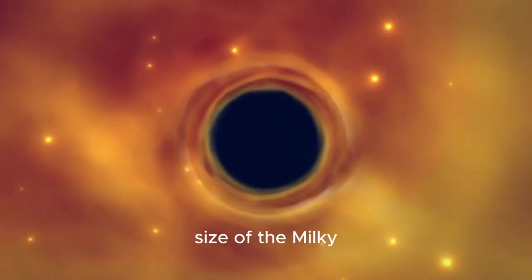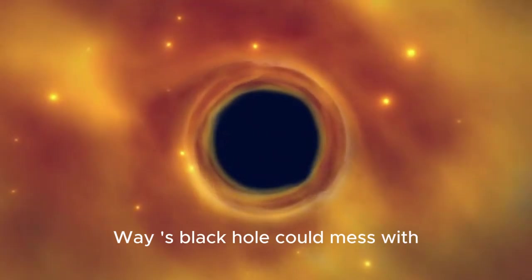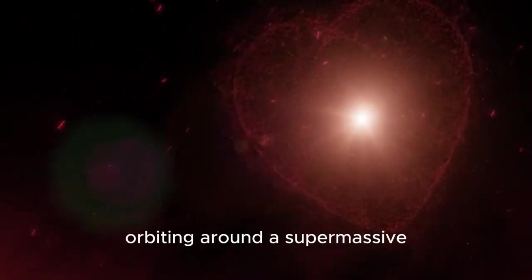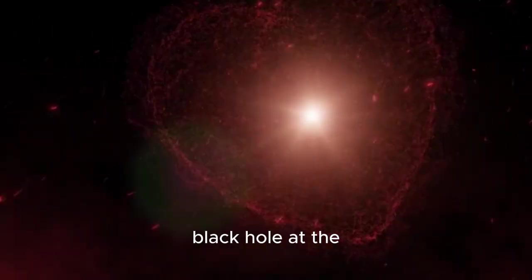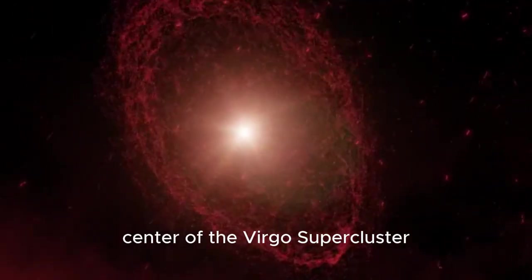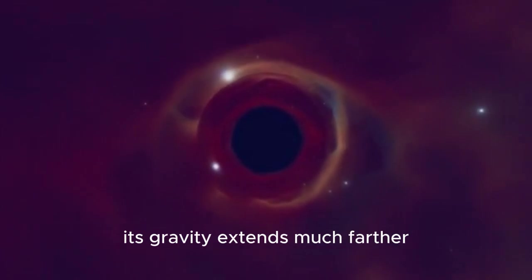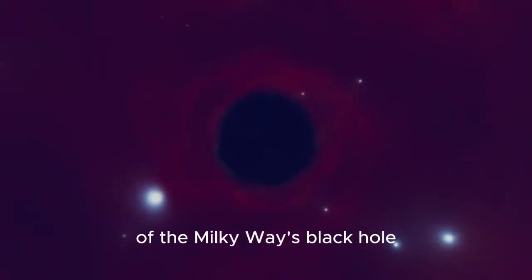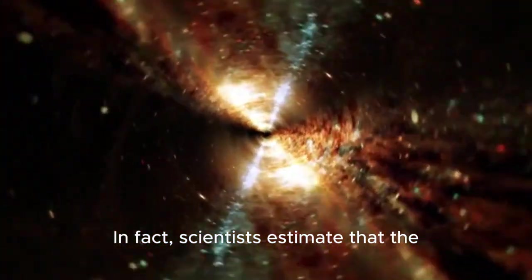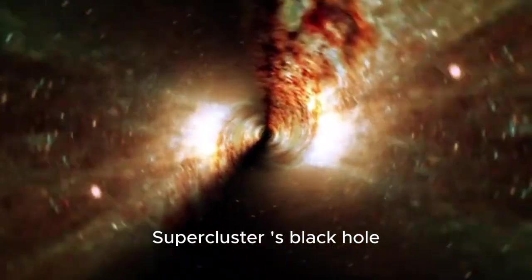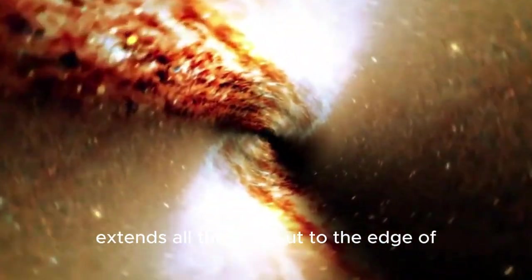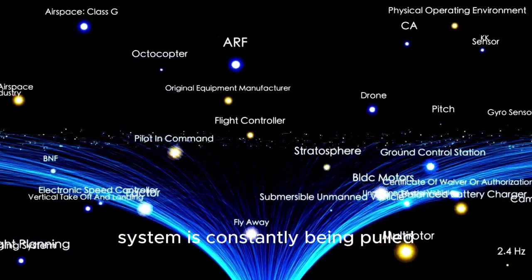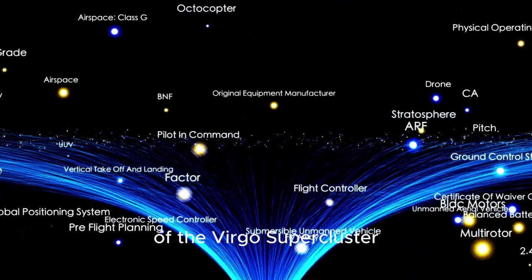Now let's talk about how the size of the Milky Way's black hole could mess with our solar system. Like I mentioned earlier, the Milky Way is also orbiting around a supermassive black hole at the center of the Virgo supercluster. And because this black hole is so massive, its gravity extends much farther out than the gravity of the Milky Way's black hole. In fact, scientists estimate that the gravity of the Virgo supercluster's black hole extends all the way out to the edge of the Milky Way. And that means that our solar system is constantly being pulled towards the center of the Virgo supercluster.